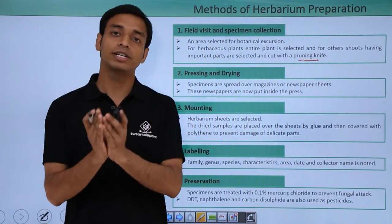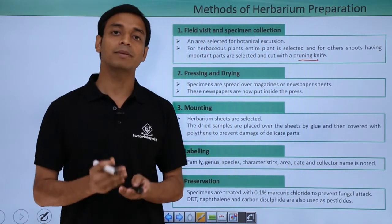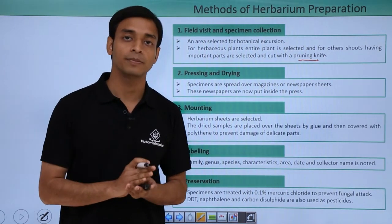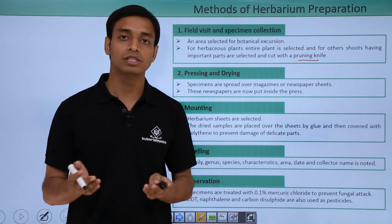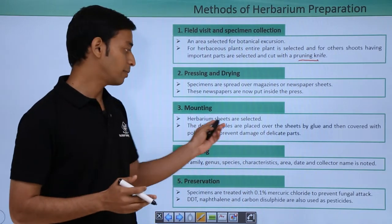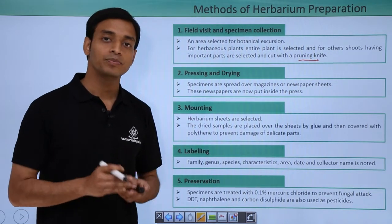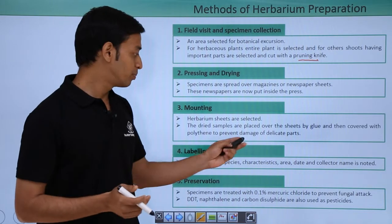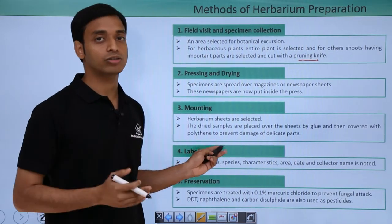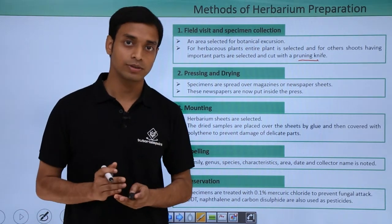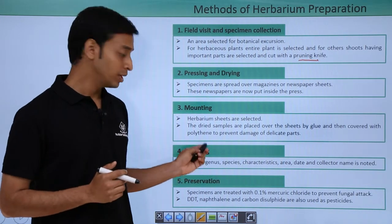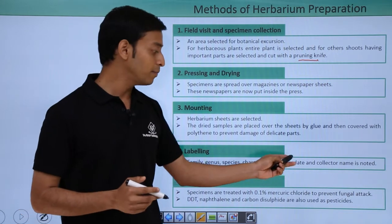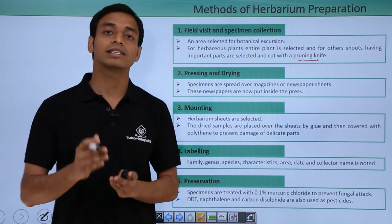The next step after drying and pressing is mounting. The dried samples are taken and pasted onto herbarium sheets using glue applied to the back side. They are then covered with polythene or tissue paper to prevent the delicate parts of the plant from being damaged. The next important step is labeling, where the family, genus, species, characteristics, area, date, and collector's name are noted down for future use.